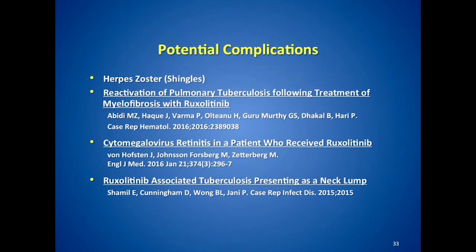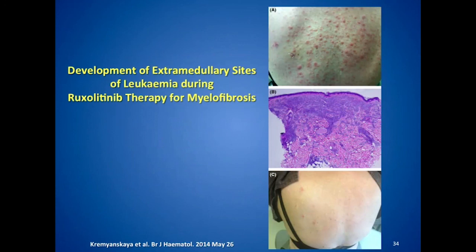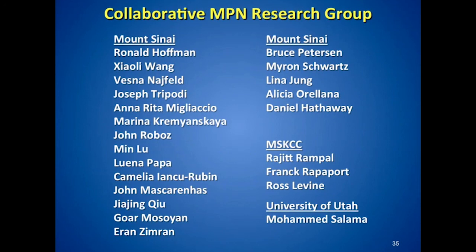The long-term consequences of ruxolitinib will be followed with extended follow-up. Critically, we have had patients with overt myelofibrosis who felt terrific on ruxolitinib but then developed a rash that turned out to be acute leukemia — so it does not appear that this drug prevents progression to acute leukemia. I sincerely thank everyone for their attention.